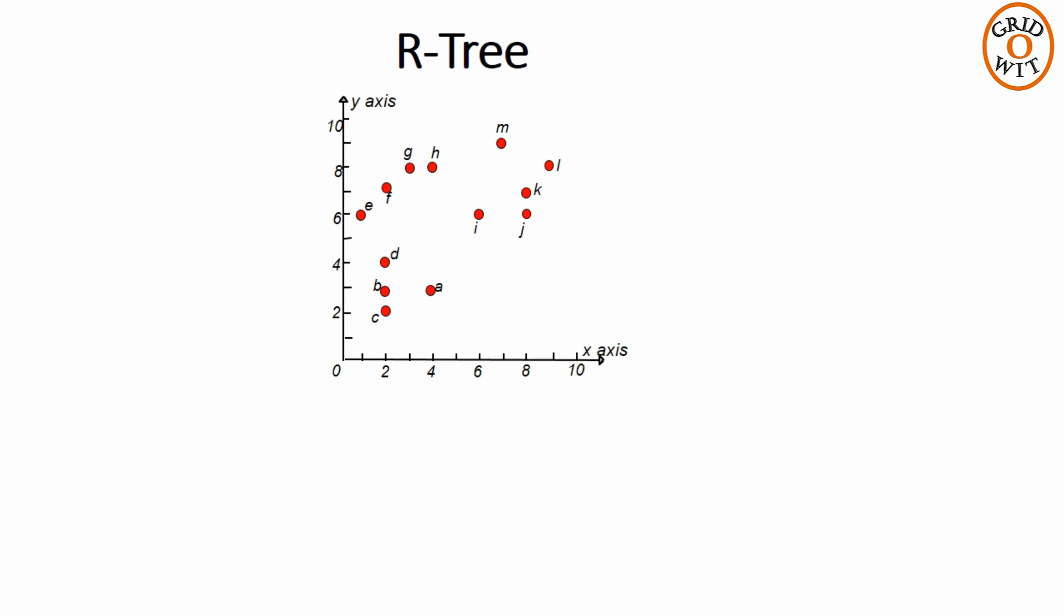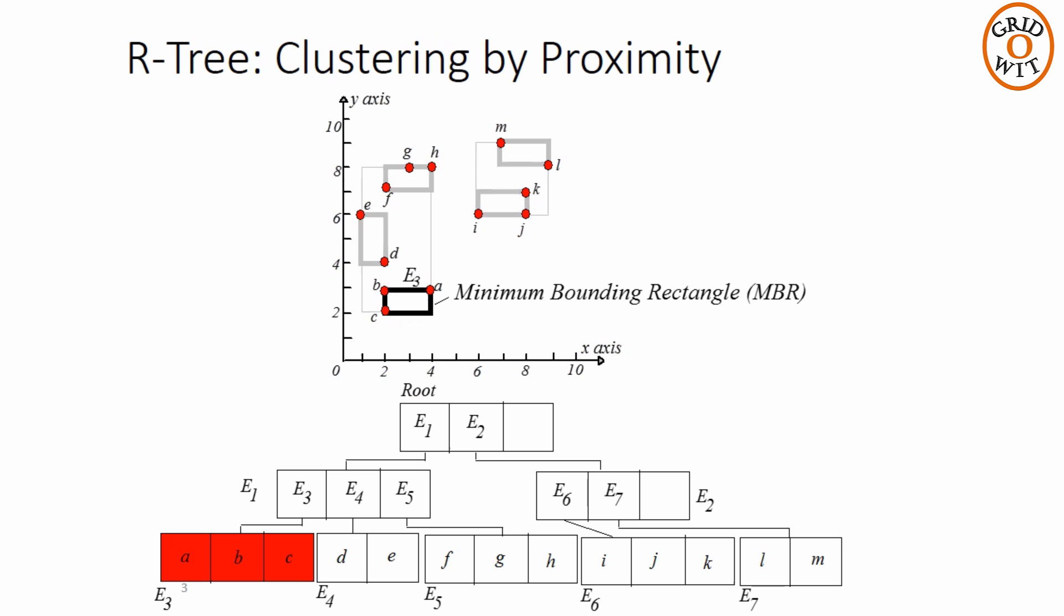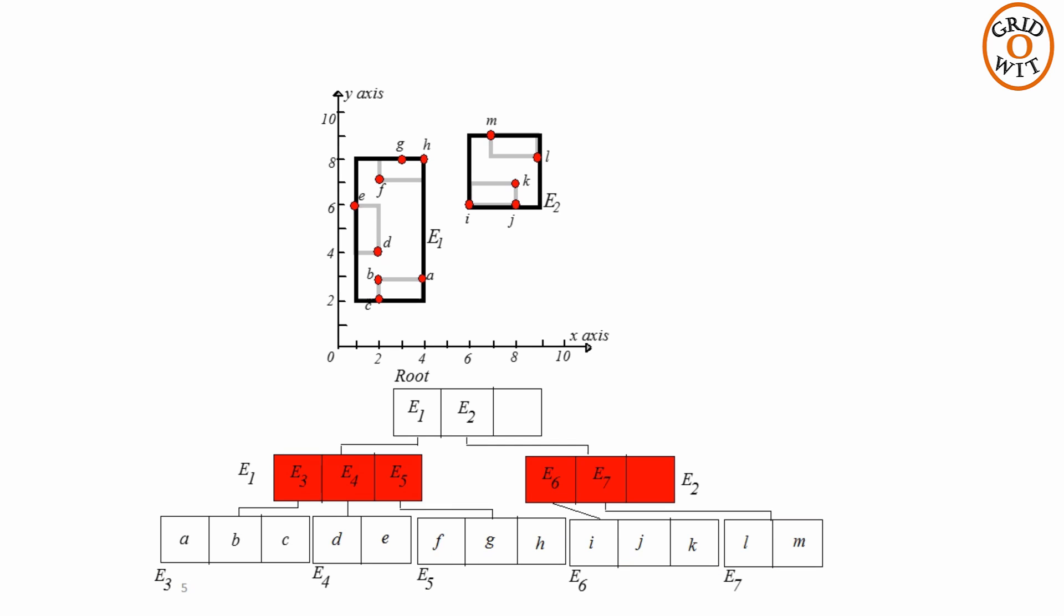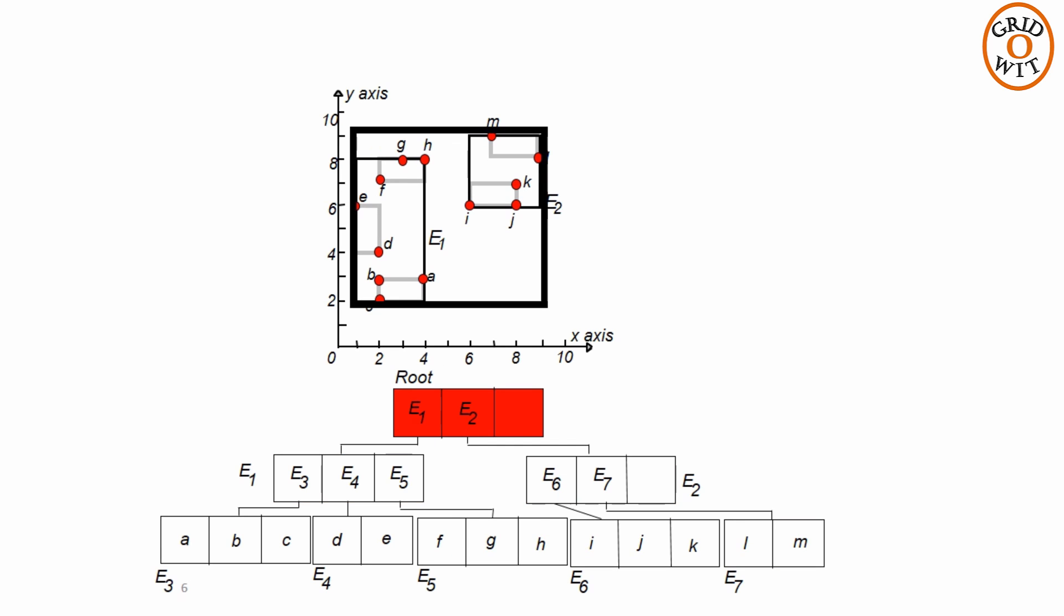The R-tree represents the spatial objects by its minimum bounding rectangle. The data rectangles are grouped to form parent nodes, which are recursively grouped to form grandparent nodes and eventually a tree hierarchy. The minimum bounding rectangle of a parent node completely contains the minimum bounding rectangle of its children. Minimum bounding rectangles are also allowed to overlap.